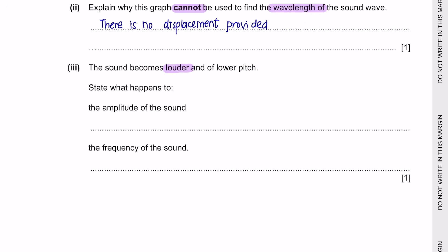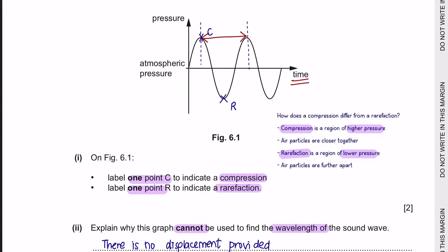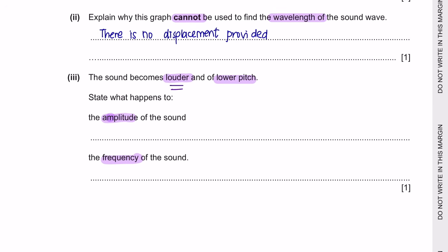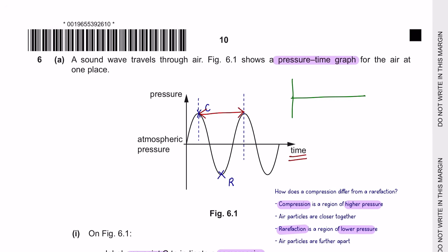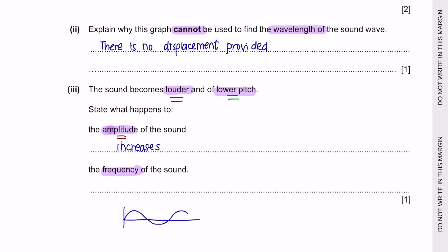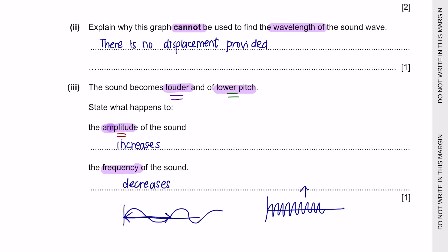Part 3: The sound becomes louder and lower in pitch. Amplitude is the height of the wave — a larger amplitude means a louder sound, so amplitude increases. Frequency depends on how close the wavelengths are; a lower pitch means wavelengths are further apart, so frequency decreases. A higher frequency corresponds to higher pitch and wavelengths closer together.